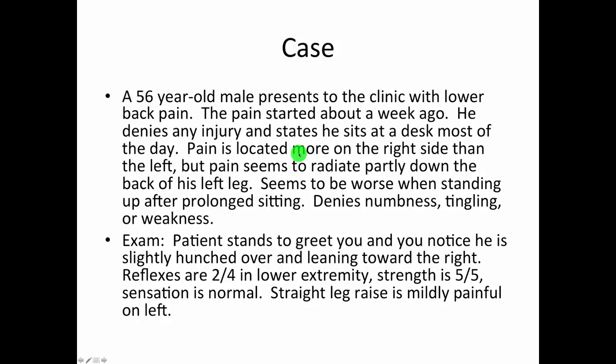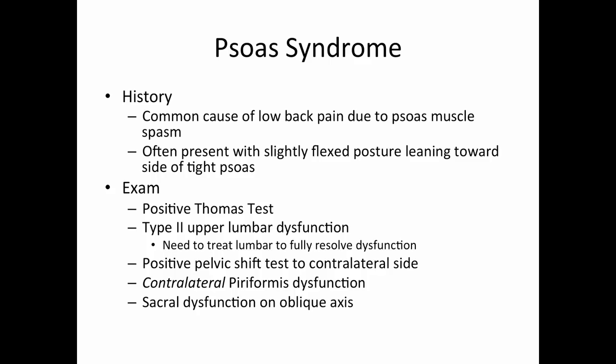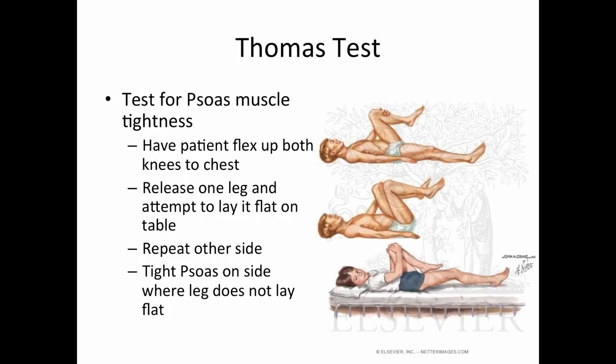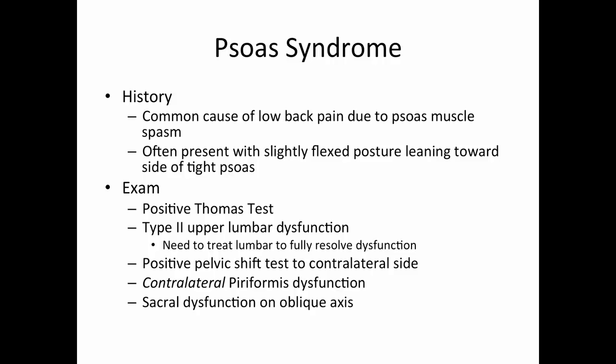The Thomas test reveals psoas muscle tightness — this is a classic case of psoas syndrome. You get that slightly flexed posture leaning toward the side of the tight psoas. There is a positive Thomas test. You'll often find a type 2 upper lumbar dysfunction that needs to be treated to completely resolve this, due to the psoas attachment. It seems important to treat the lumbar spine along with the psoas for full resolution.